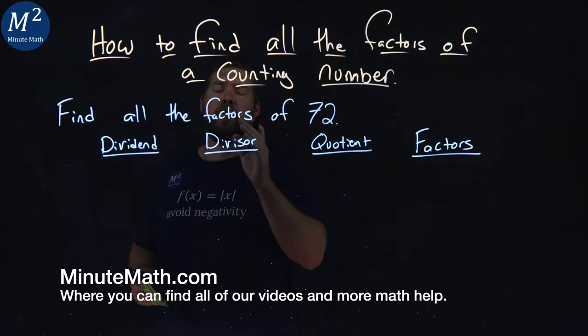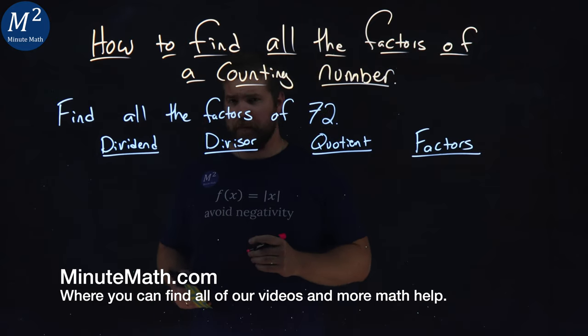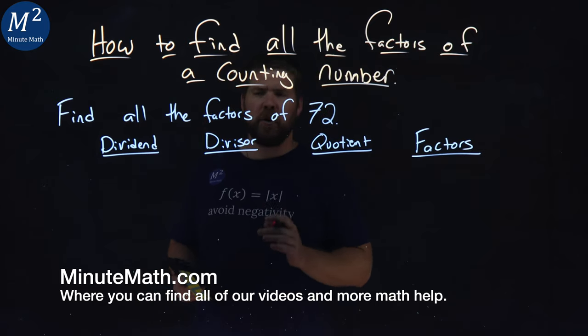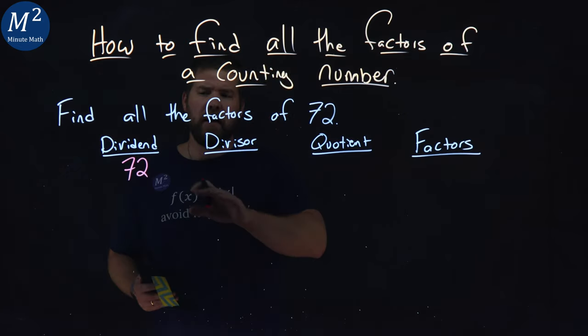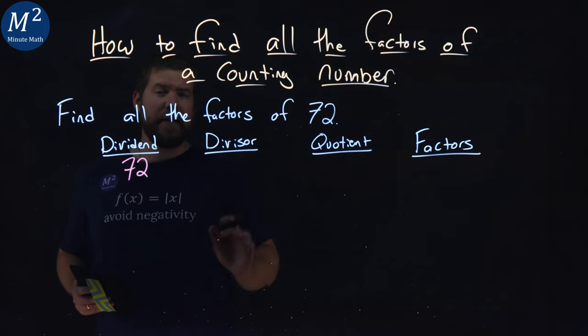We're given this problem: find all the factors of 72. We're going to create a little chart here. Dividend, 72. And I'm going to make basically all the dividends 72, that's what we're checking here.